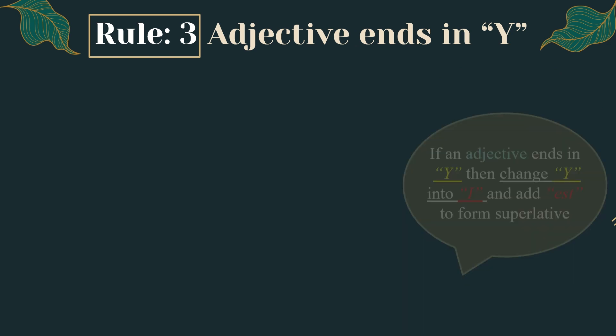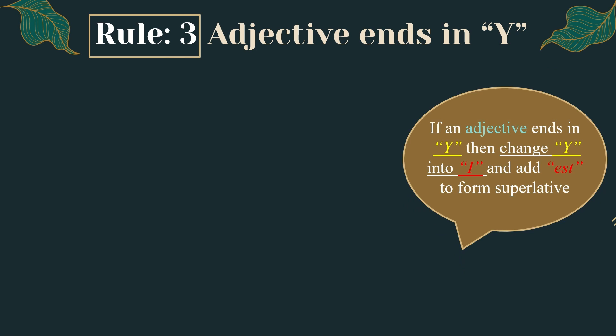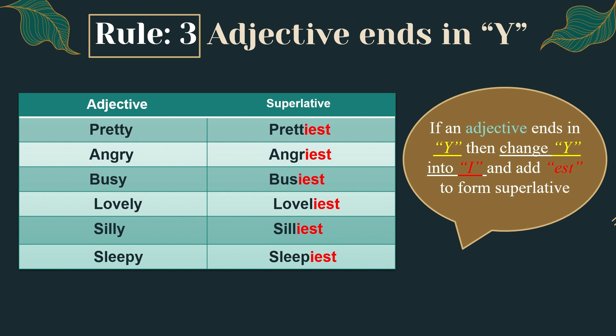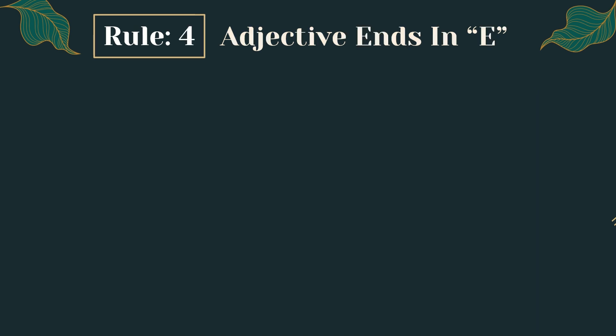Rule number three: adjective ends in the letter Y. If an adjective ends in Y, change Y to I and add -est to form the superlative. For example, 'pretty' ends in Y, so we replace Y with I and add -est: pretty → prettiest. Further examples: angry → angriest, busy → busiest, lovely → loveliest, silly → silliest, sleepy → sleepiest.